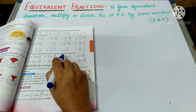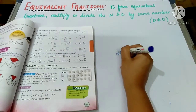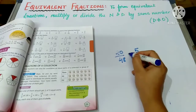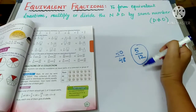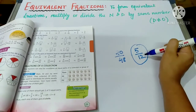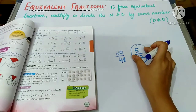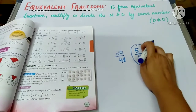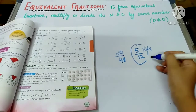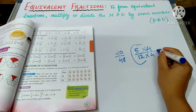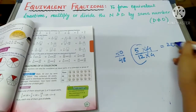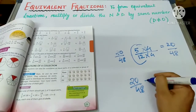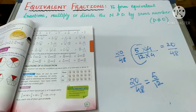In question four, you have to check whether the fractions are equivalent or not. Part (c1): twenty upon forty-eight and five upon twelve. Always use the multiplication method with the smaller fraction. Five is smaller. What should we multiply five by to get twenty? Five fours are twenty. That means twelve is also multiplied by four: twelve fours are forty-eight. So both fractions are equivalent and you will write that they are equal.